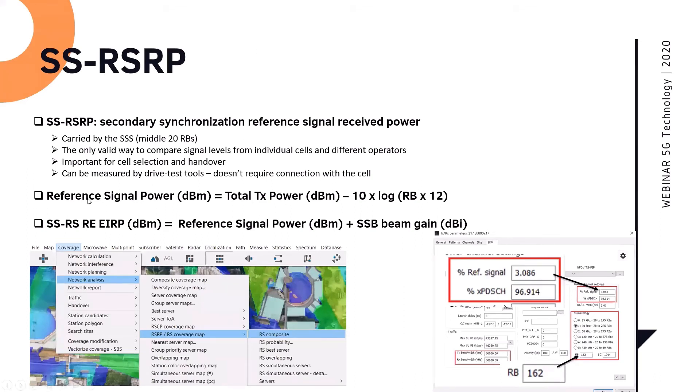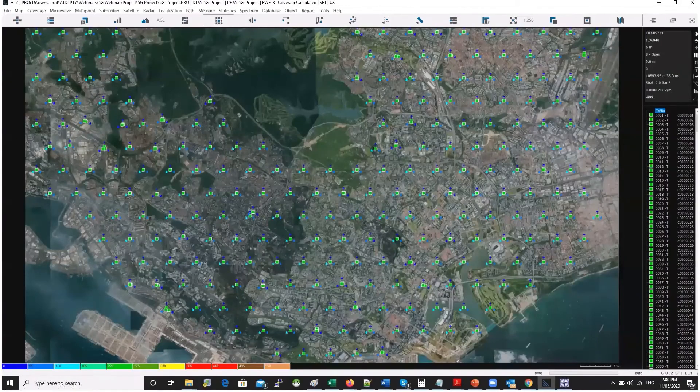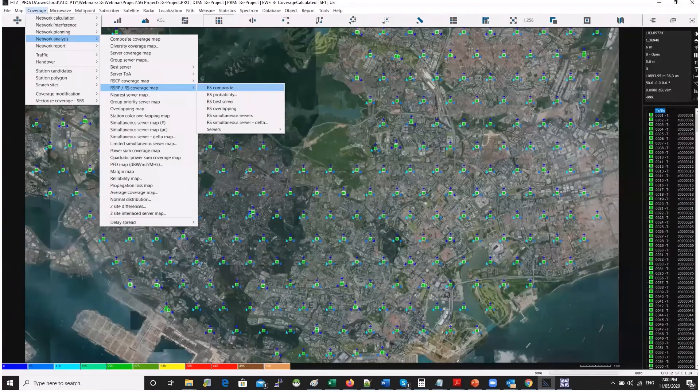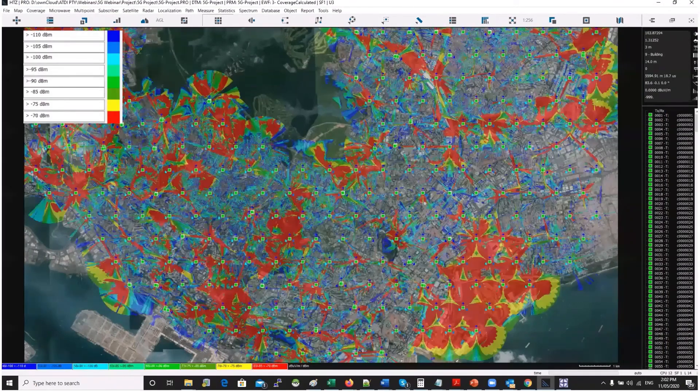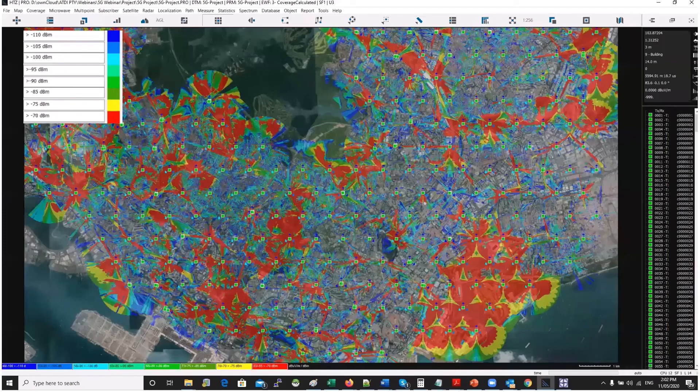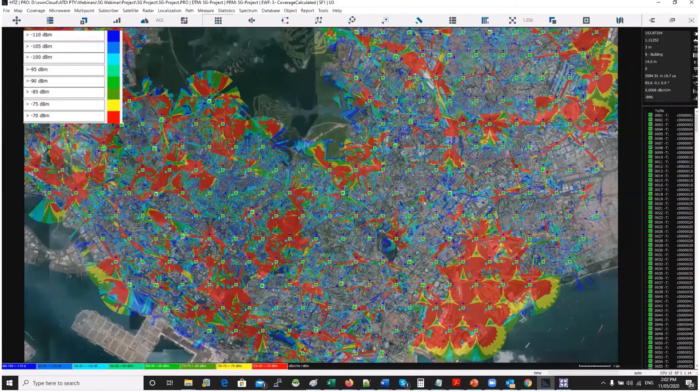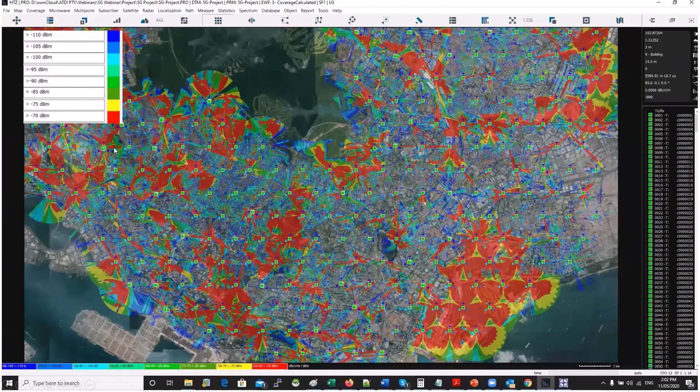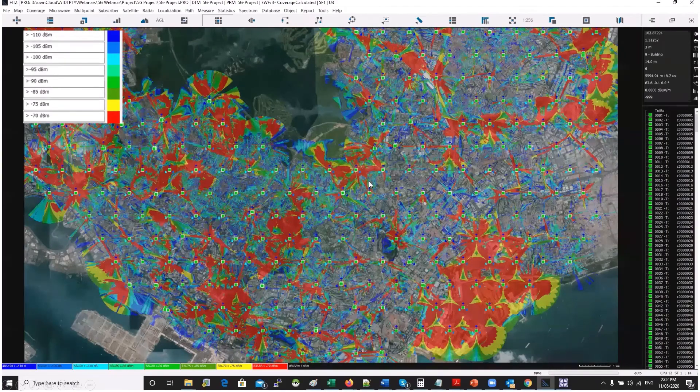So this is some equations here to show you how you can derive reference signal. But what's interesting here is that the SSB beam is important. So very importantly, we establish the beam gain from the broadcast beam and that's to be used to predict the RSRP coverage. So let me show you how that works. So this is the network I have on the map now. And then you go to coverage network analysis, RSRP, RS composite coverage, and then the software will show you the RSRP, will calculate the RSRP for you. So this is the RSRP and you can see here on the bottom or you can see the legend here on the top. So we've got minus 110 dBm to minus 70 dBm and above. So you can see the coverage range on the map.